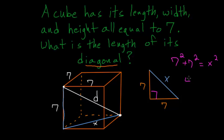7 squared is 49, so we have 49 plus 49 is equal to X squared. 49 plus 49 is equal to 98. So X is just equal to the square root of this.